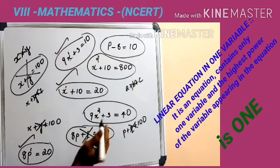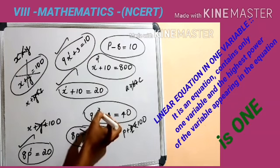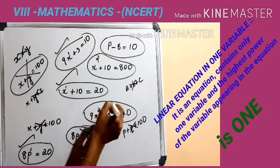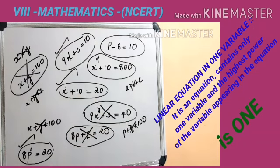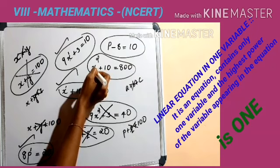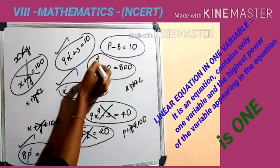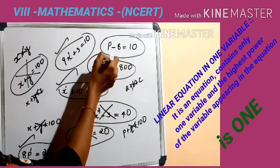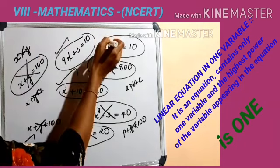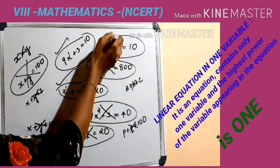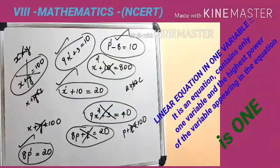See children, what about here? There is only one variable, but its power is more than one — it is not equal to one. So this is not an example for a linear equation in one variable. Here also, only one variable but its power is greater than one, so it is not a linear equation in one variable. What about p minus 8 equals to 10? Yes, only one variable and its power or exponent equals one, so this is also an example for a linear equation in one variable.